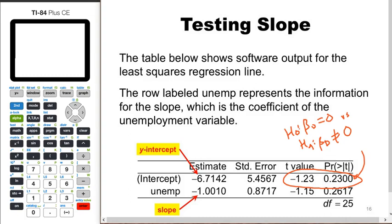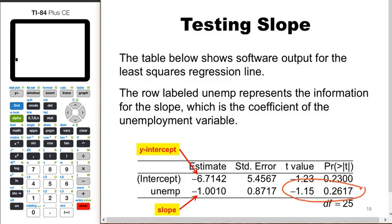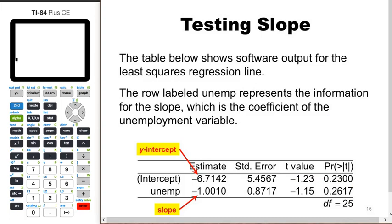The p-value for the intercept is 0.23, so we fail to reject — it's plausible that the intercept is really zero. We had an estimate of negative 6.7, but the standard error is large enough that maybe the percent change really would have been zero if unemployment rate were zero. The next line deals with the slope: the null hypothesis is β₁ equals zero versus β₁ not equal to zero. The p-value is 0.2617, so it's plausible the slope is zero.